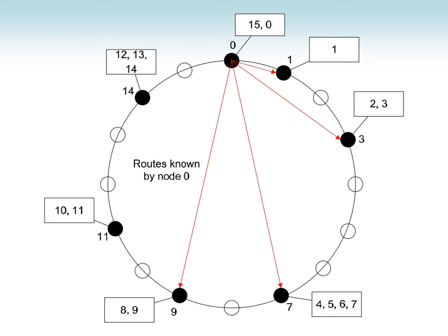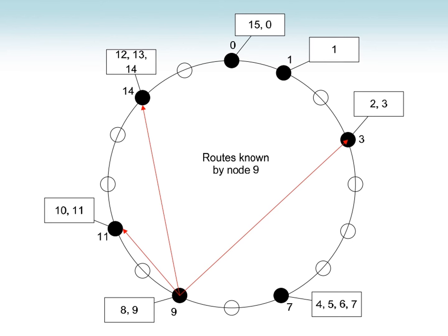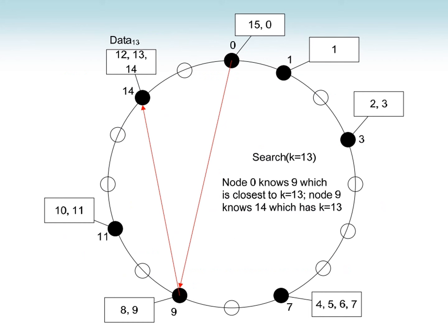So how do we make it efficient using the finger table? The routing information is stored in each node. As per node 0's finger table, its successors are 1, 3, 7, and 9. Node 1's successors are 3, 7, and 9. Node 3's successors are 11, 14, and 3. Using this routing information, we can go from node 0 to 9, then from node 9 to 13. Since 13 is not present, we reach 14. So instead of a sequential search from 0 to 13, we directly go 0 to 9, then 9 to 14, reducing the search space significantly.